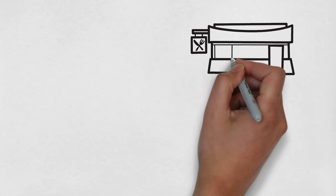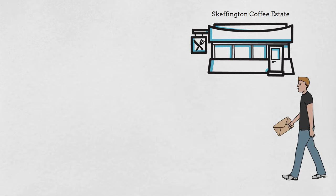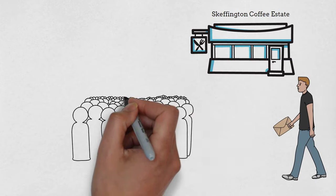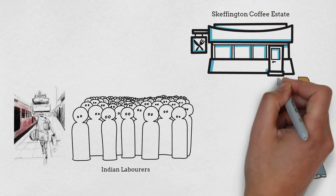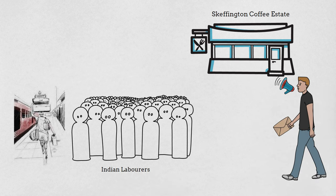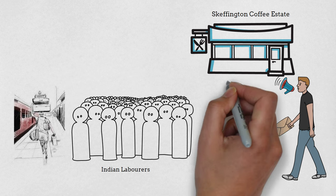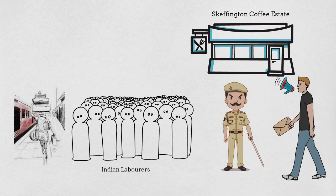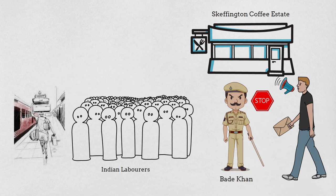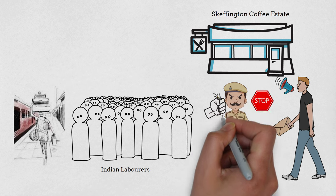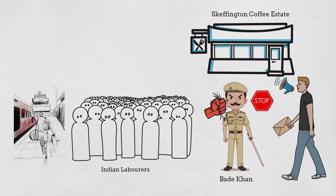As the story continues, the clerks of a local coffee estate send an invitation to Moorthy, wanting him to address the local caste laborers at meetings to create awareness of Gandhian teachings. Moorthy agrees and is eager to propagate Gandhi's message to the people of Kanthapura. However, a local policeman named Bade Khan appears and stops Moorthy from speaking.